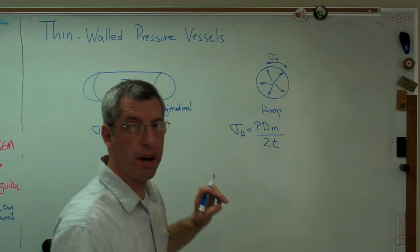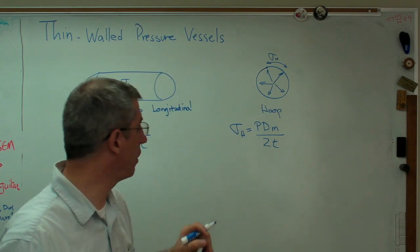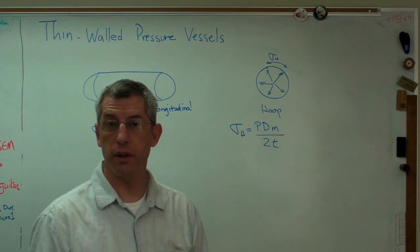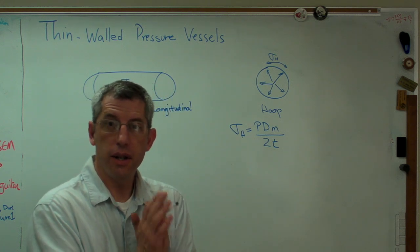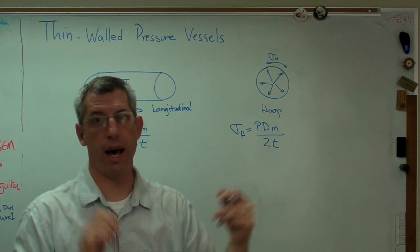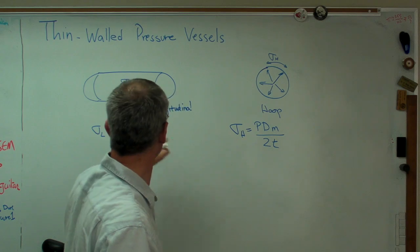Even if you don't have hemispherical end caps, sometimes you're close enough. Now, what this means is that when a pressure vessel fails, it tends to unzip. It tends to blow the side open. It doesn't tend to blow the end caps off because this stress is twice that.